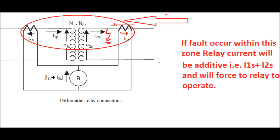But during a fault in this zone, the relay current is no longer I1s minus I2s — it will be I1s plus I2s, as shown in this figure. Hence, the relay will send a trip signal. This is the basic principle of the differential relay.